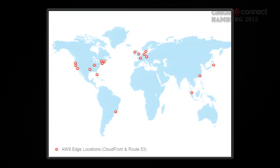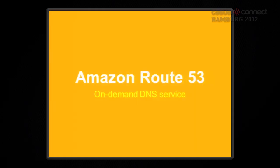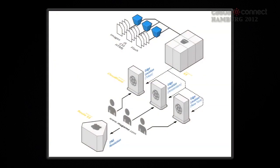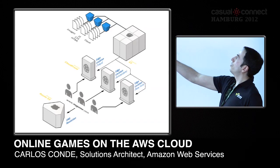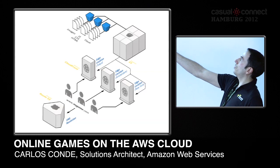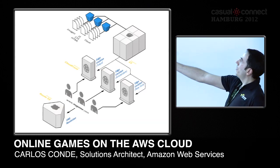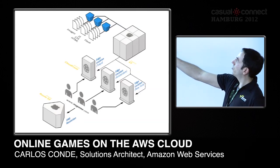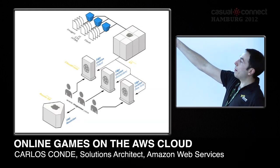Some players will be in remote locations. I ended the last session with CloudFront, so you already know what it is — we have different edge locations around the world. If you combine this with Route 53, the DNS service, you end up with this kind of architecture where your players are redirected to different edge locations. A player in Japan connects to the CloudFront edge in Tokyo, one in Amsterdam, one in New York — but all these edge locations download the game from Amazon S3.